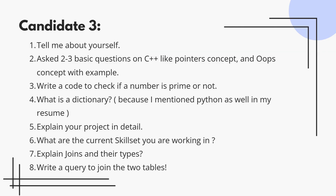The seventh question was: explain joins and their types. Know inner, left, right, and full outer joins with examples. Also, write an SQL query to join two tables. Be ready to explain how foreign keys work and how to optimize queries for performance. They will ask SQL queries during the interview, so be prepared.